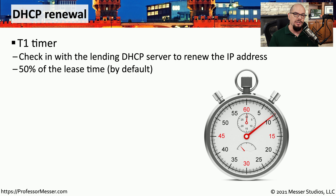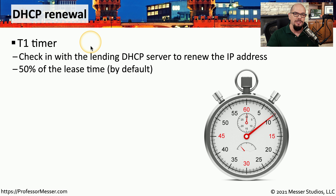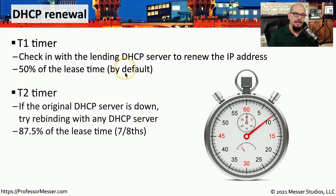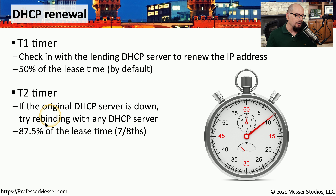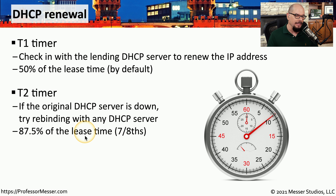There are two important timers to know about during the DHCP leasing process. The first is the T1 timer, which your client workstation uses to check back in with the DHCP server to automatically renew the lease. By default, this is 50% of the lease time. The second is the T2 timer — if the original DHCP server is down or unavailable, the T2 timer will rebind with any available DHCP server. By default, the T2 timer is 87.5% — or seven-eighths — of the lease time.